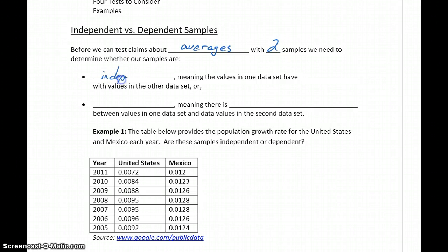Two samples are considered to be independent if the values in one data set have no relationship with the values in the second data set.